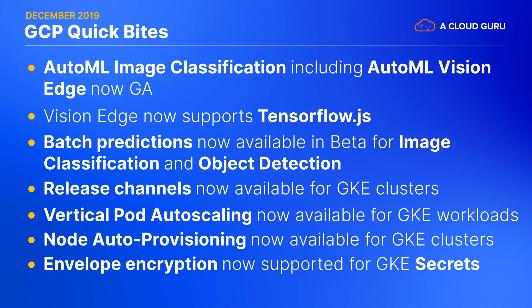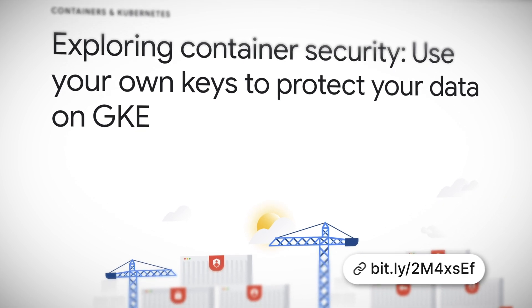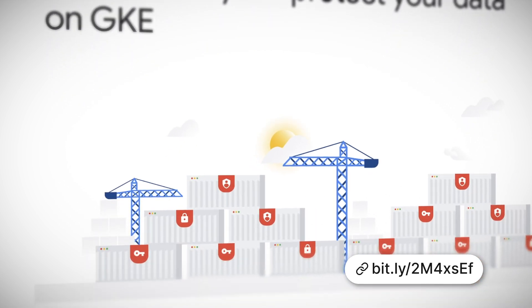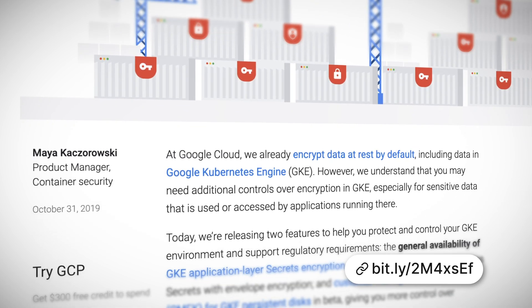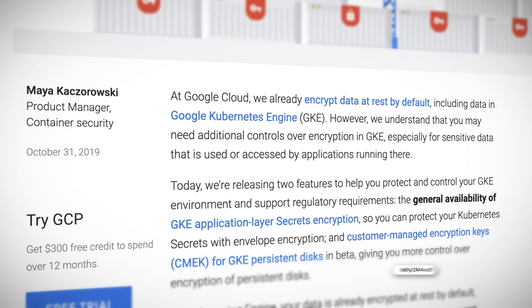Last but not least, here's an announcement that didn't quite make it into last month's episode, but will be very relevant to those of you handling sensitive data in GKE. You can now use envelope encryption for secrets in GKE to securely encrypt secrets using a Cloud KMS managed key. And you can use customer-managed encryption keys, or CMEKs, for persistent disks in GKE. These new features will help GKE administrators working in regulated industries, or any organization where information security is a top priority.